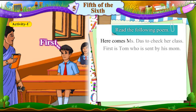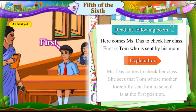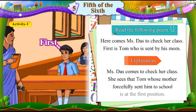Here comes Miss Daas to check her class. First is Tom who is sent by his mom. Miss Daas comes to check her class. She sees that Tom, whose mother forcefully sent him to school, is at the first position.